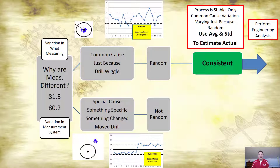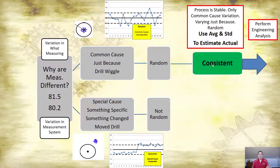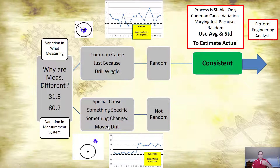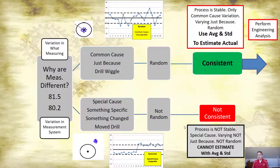Any time we take measurements and ask why they're different, they could be different just because of randomness — common cause — which means the process is stable and operating consistently based on a distribution. Or there's something special happening: something changed — the drill moved — so it's not random, it's not consistent, the process is not stable, and we can't use the average and standard deviation to estimate what's going on.